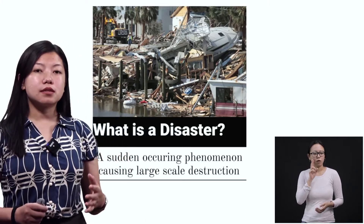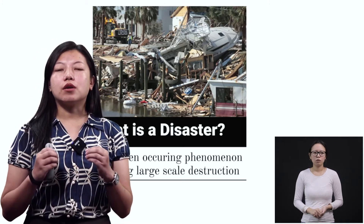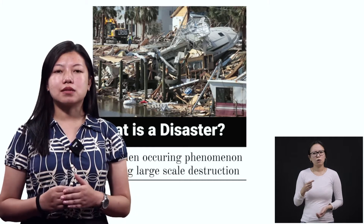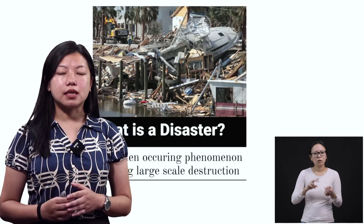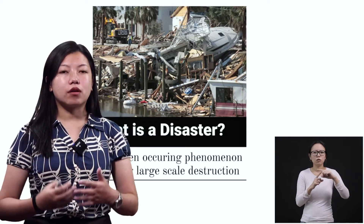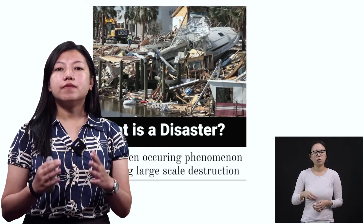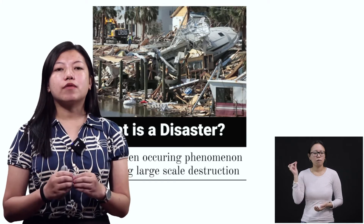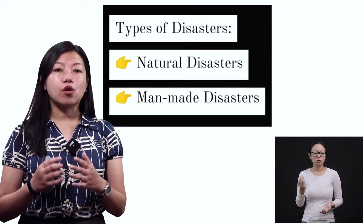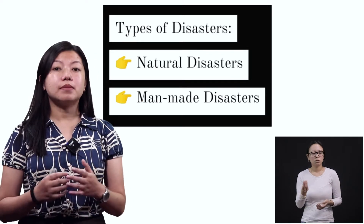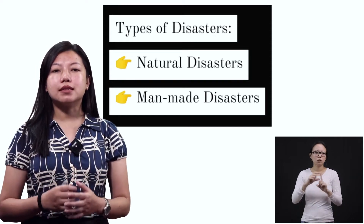These disasters happen suddenly. Only in some cases do we get information before they happen; most of the time disasters happen suddenly and that is why we are not prepared. In this lesson you will learn about different types of disasters — some occur naturally whereas some are man-made, meaning we are the ones who create those disasters.